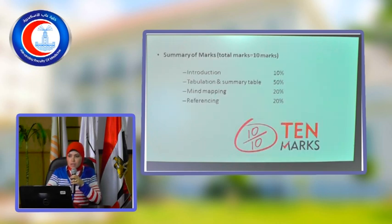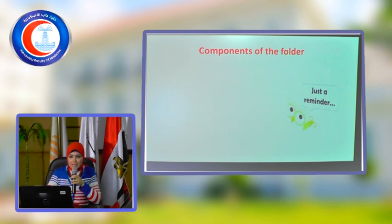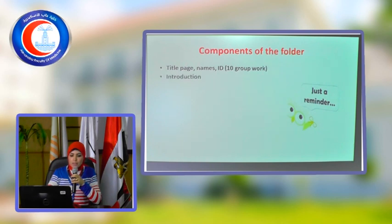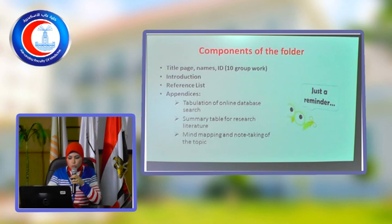We'll review the assignment. We'll be talking about the introduction, five points on the preparation table, two tables — a search plan table and a summary of articles table, mind mapping, and the list of references in Vancouver style. The folder that you submit must include all these items: a title page with group ID, introduction in 500 words, reference list of at least 10, and three appendices — table with search plan, table with searching literature and summary of articles, and a mind map diagram with note-taking.